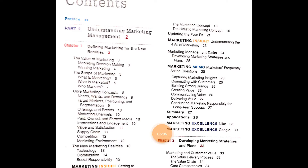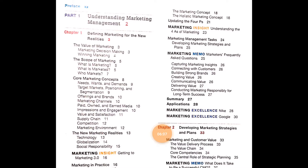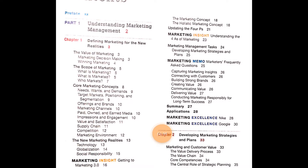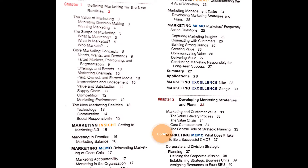Chapter 1 also covers marketing concept and holistic marketing concept, updating the four P's — price, product, promotions — and Marketing Insights on understanding the four A's of marketing. Then marketing management tasks are discussed, including developing marketing strategies and plans. A Marketing Memo covers frequently asked questions on topics like capturing marketing insights, connecting with customers, building strong brands, creating value, communicating value, delivering value, and conducting marketing responsibility for long-term success. The chapter ends with a summary, application, and marketing excellence case studies on Nike and Google.